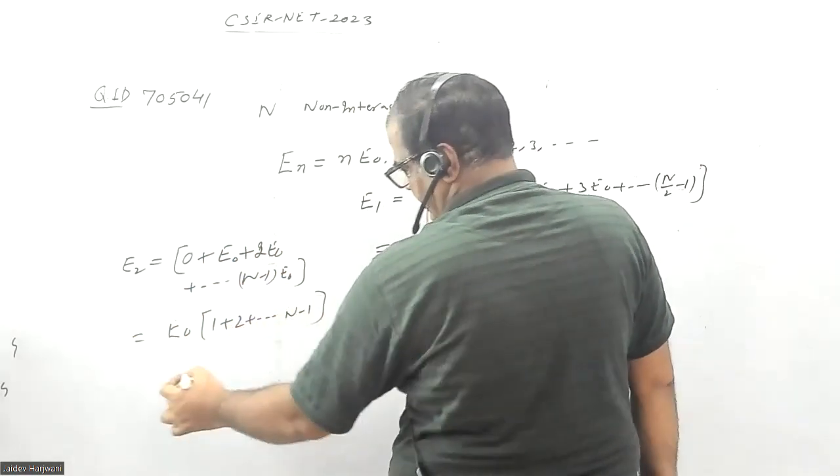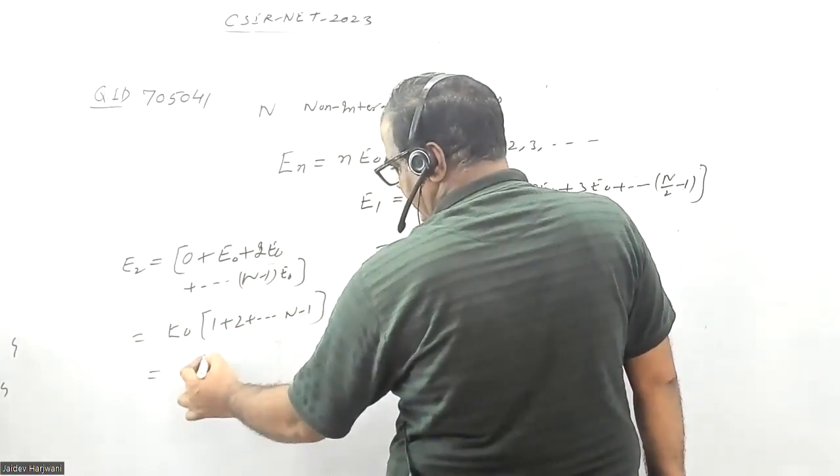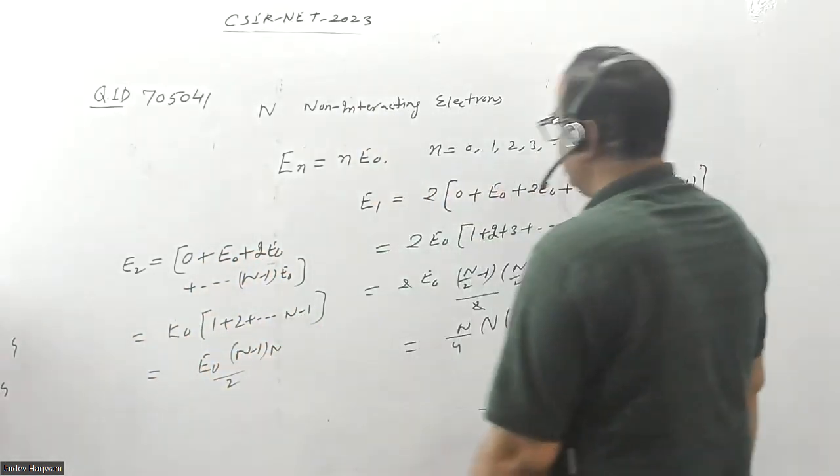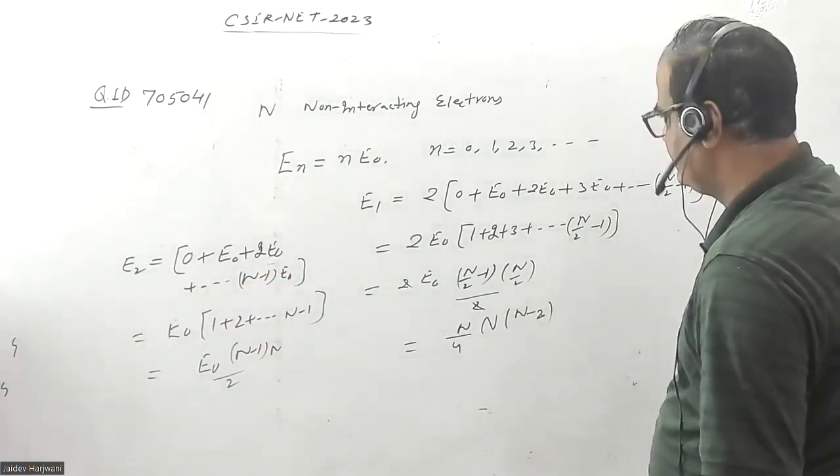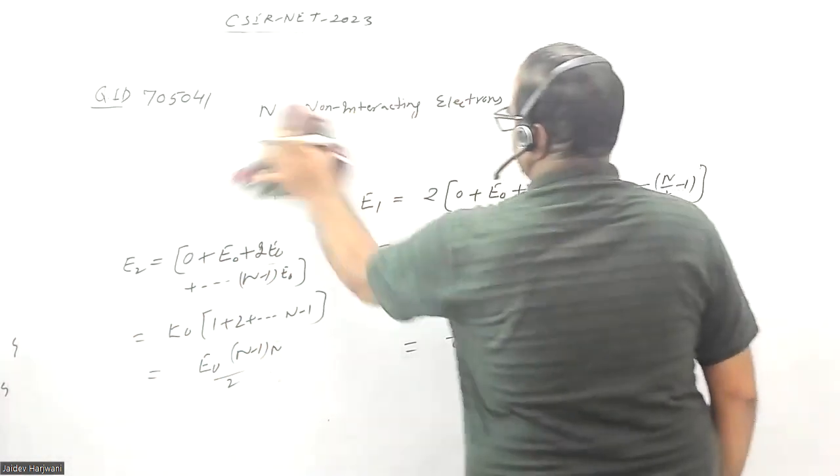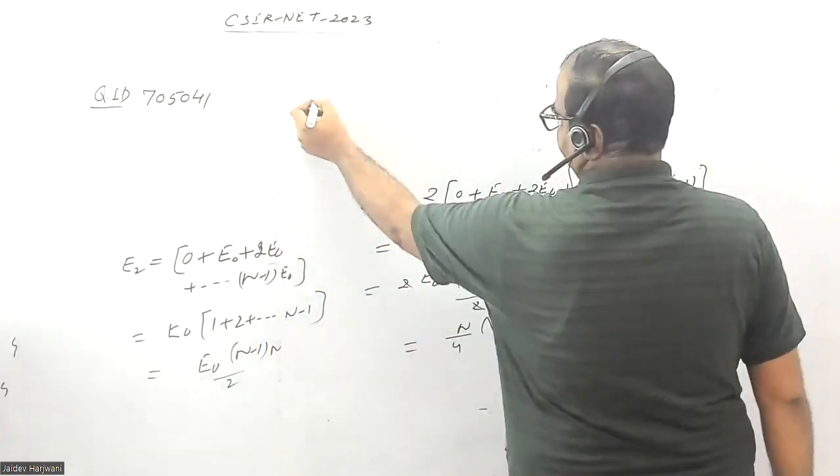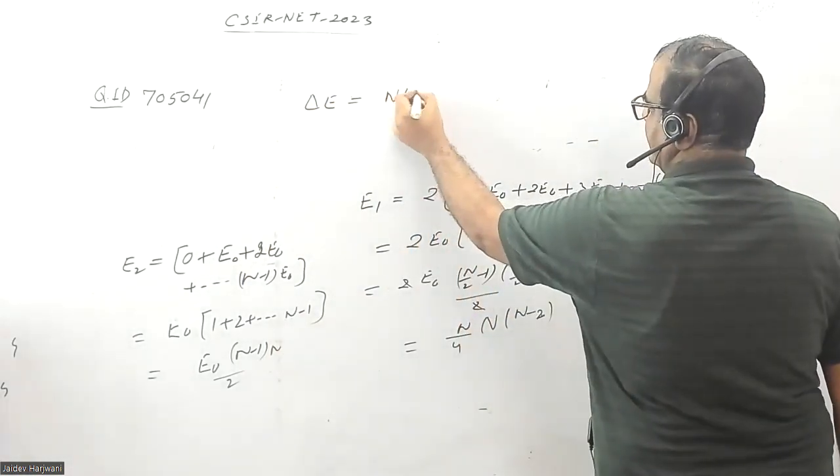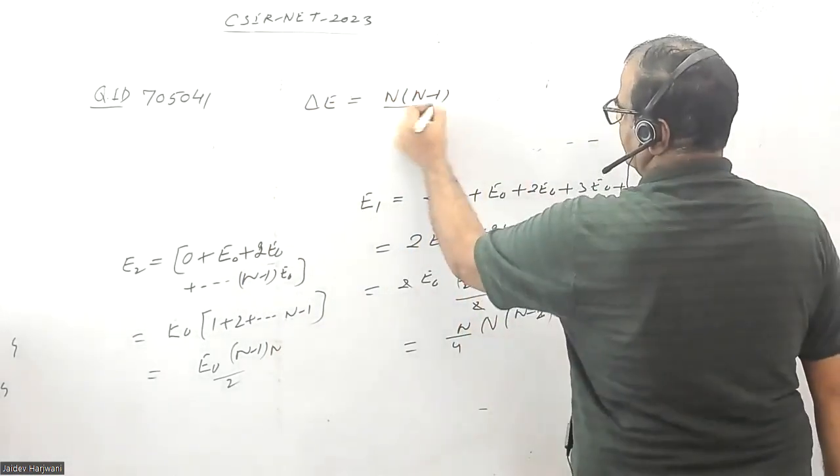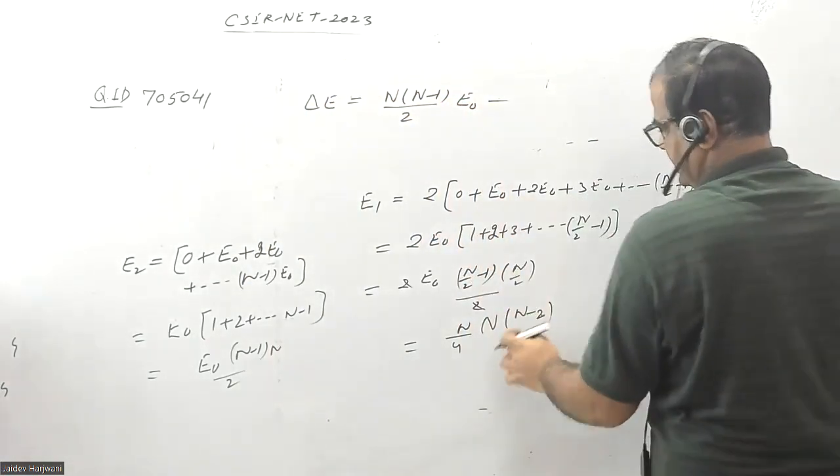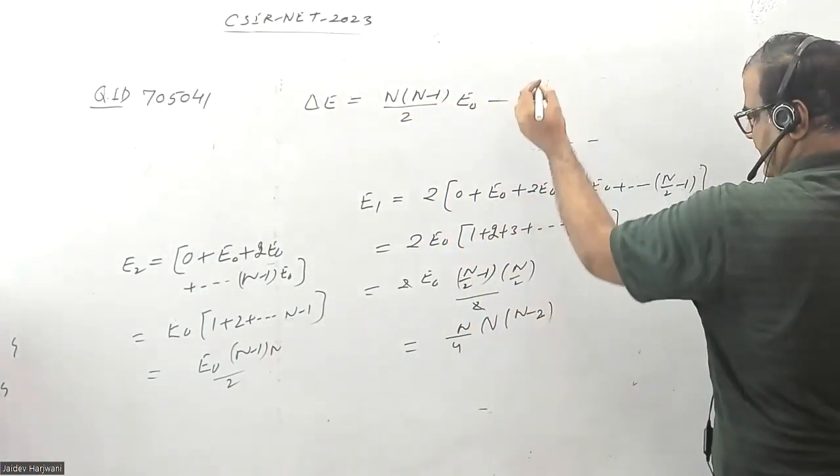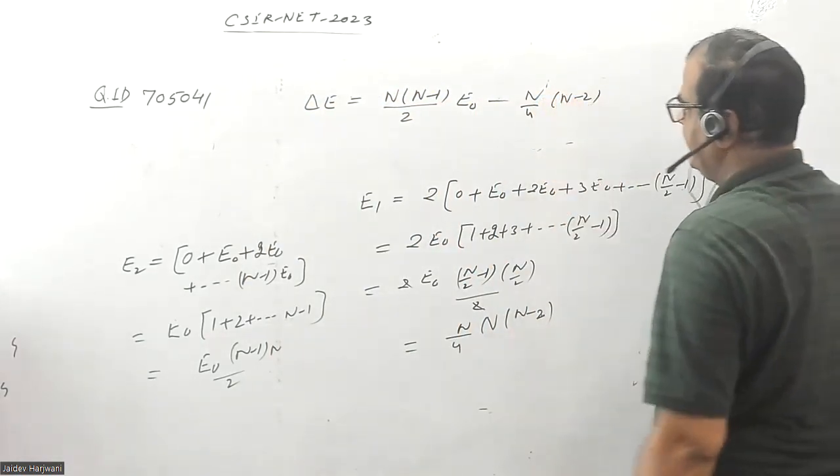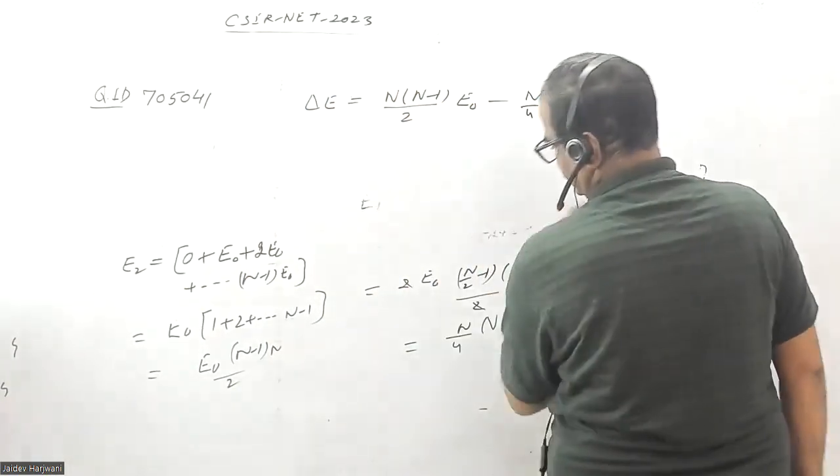This energy will become E0 times (N minus 1) times N upon 2. Now they are asking the shift in energy, so let us calculate the shift in energy of the ground state. The shift in ground state energy will be this energy, (N minus 1) times N upon 2 times E0, minus this energy, N upon 4 times N times (N minus 2). Let us calculate this energy.